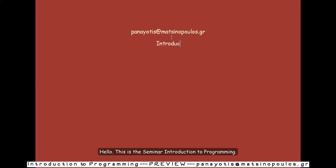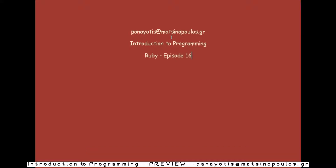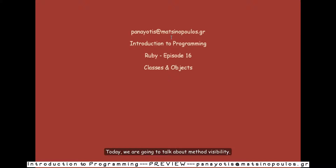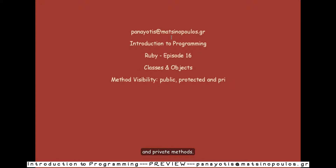Hello, this is the 7th introduction to programming. We continue our Ruby episodes — this is Ruby episode number 16. This is the last episode on classes and objects. Today we are going to talk about method visibility: about public, protected, and private methods.